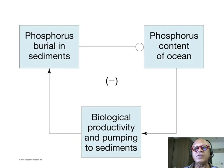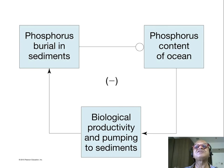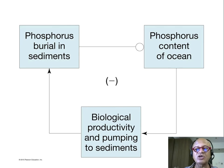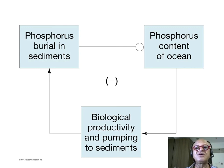Increased phosphorus burial in sediments is going to decrease the phosphorus content of the ocean. To the extent that phosphorus is a critical nutrient for photosynthesis, that's going to be a positive feedback: if you decrease phosphorus in the ocean, you decrease biological productivity and pumping to sediments, and that's going to decrease phosphorus burial in sediments.